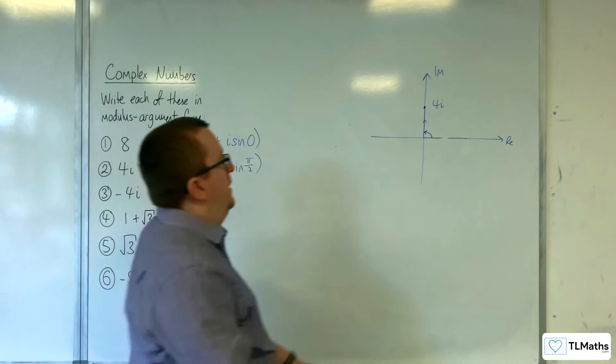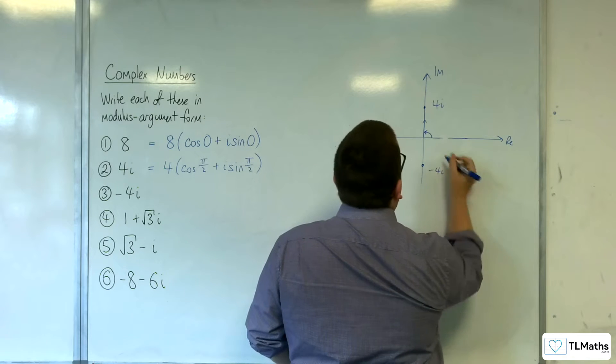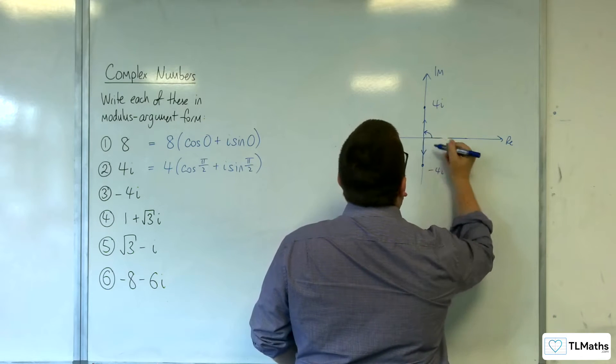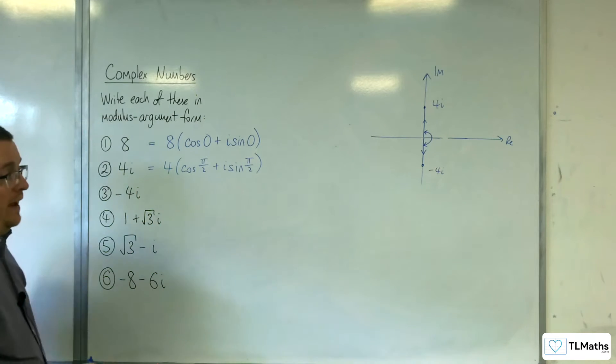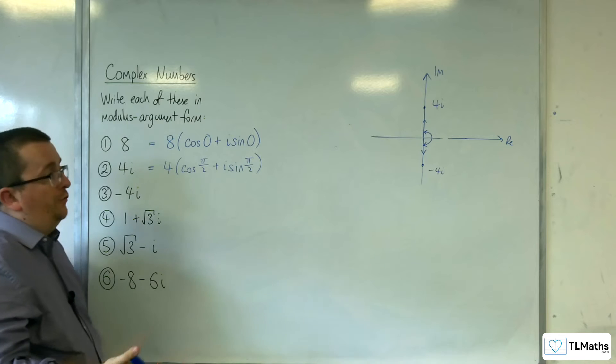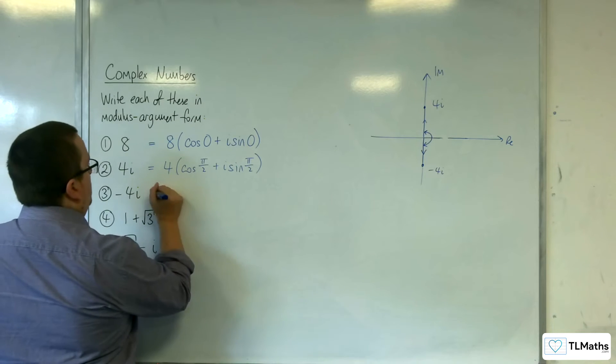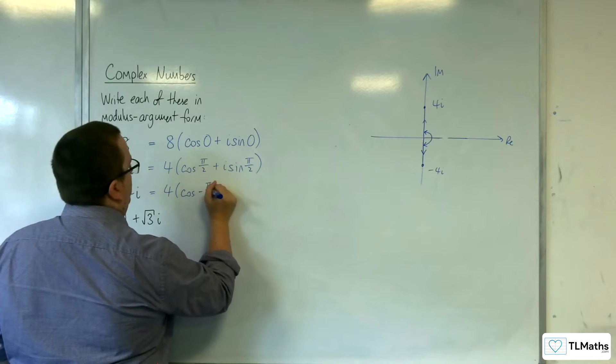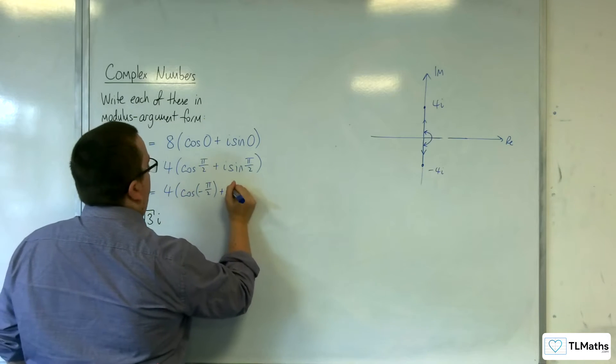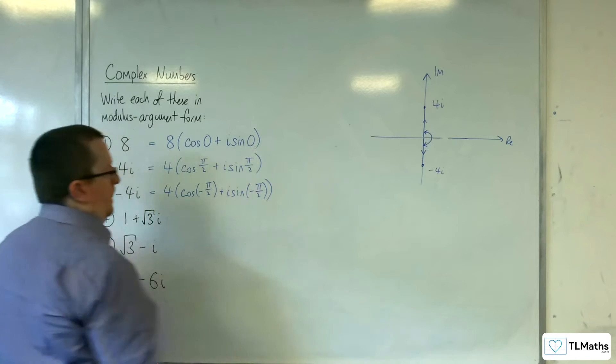Right, minus 4i. Now if we're looking at minus 4i, that looks like that, and clearly the modulus is 4. The argument is minus π over 2. So we'd have 4 cosine of minus π over 2 plus i sine of minus π over 2.